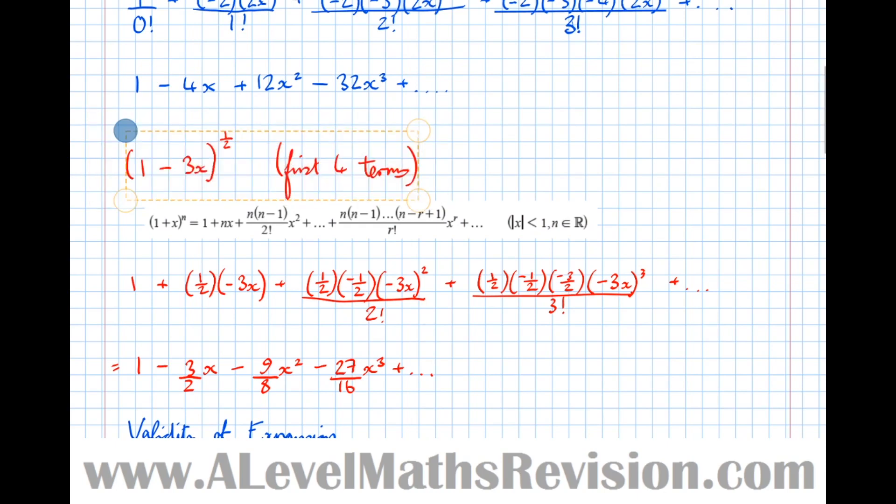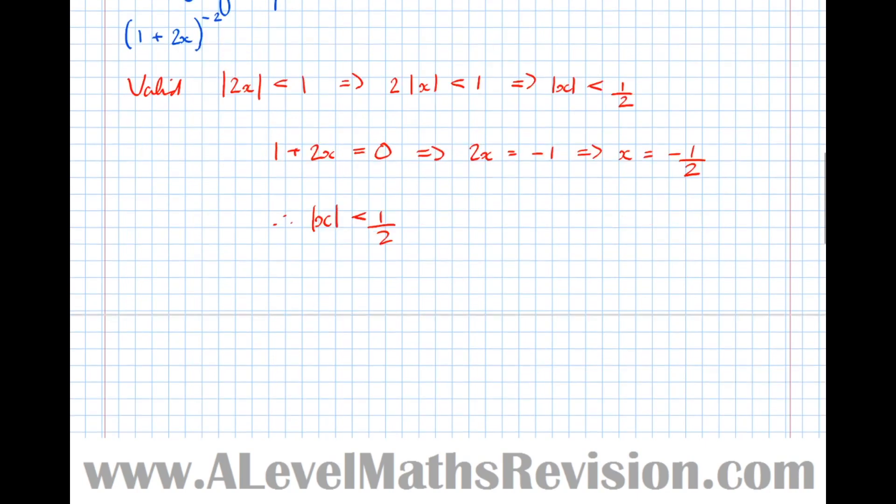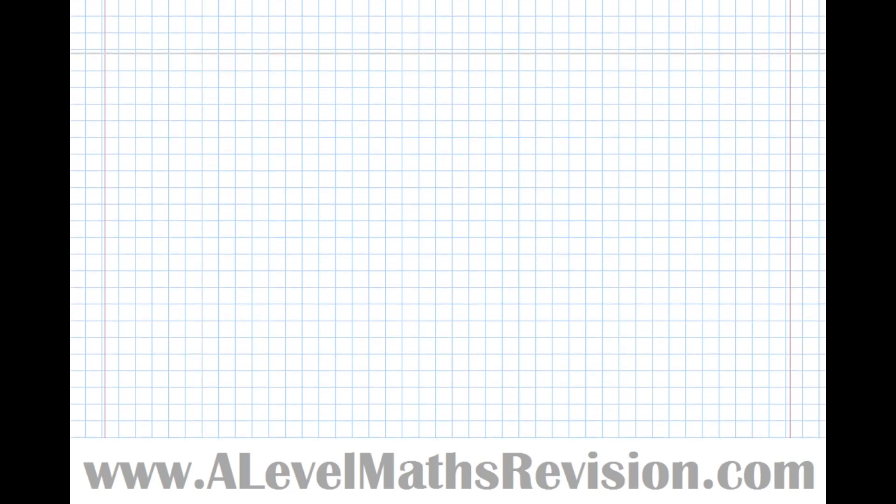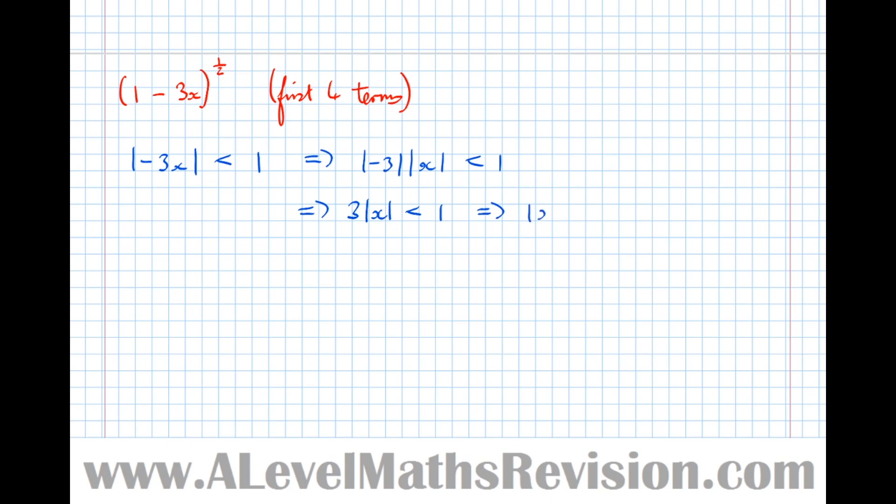Let's try this one here. The x term has to be less than 1, so modulus of minus 3x is less than 1. The modulus of minus 3x is the modulus of minus 3 times the modulus of x, less than 1. The modulus of minus 3 is just 3, so 3 modulus of x less than 1, which means that modulus of x is less than a third.